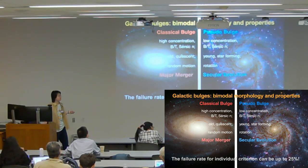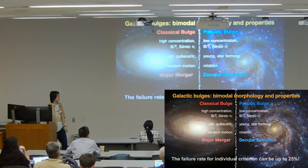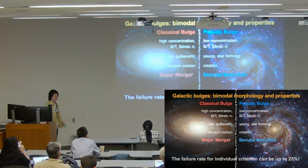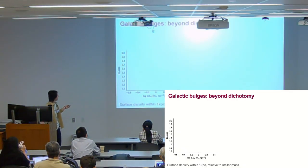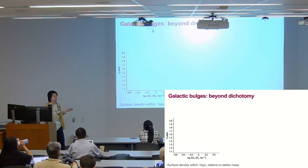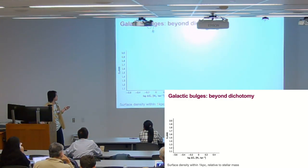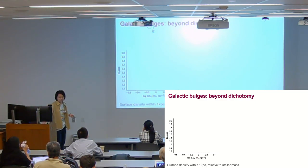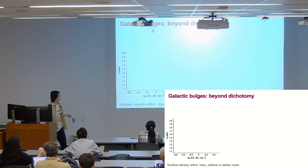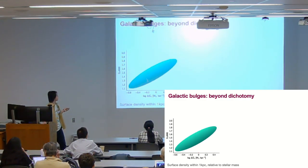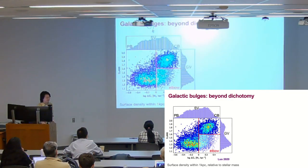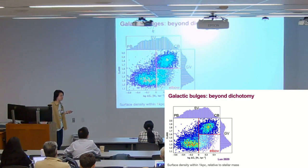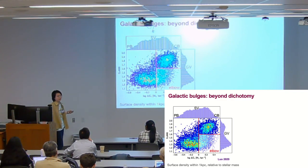This dilemma in bulge classification blurs the boundary between the two bulge types and challenges people's understanding of bulge formation. If we put galaxies in this parameter space — x-axis is surface density within one kiloparsec relative to mass, and y-axis is central stellar population versus central density — if the formation scenario where classical bulges form by mergers and pseudobulges form by secular evolution is correct, we would expect a diagonal distribution. But observations show an elbow shape instead, with a large fraction of galaxies that are structurally similar to classical bulges (higher density) but also star-forming, like pseudobulges.